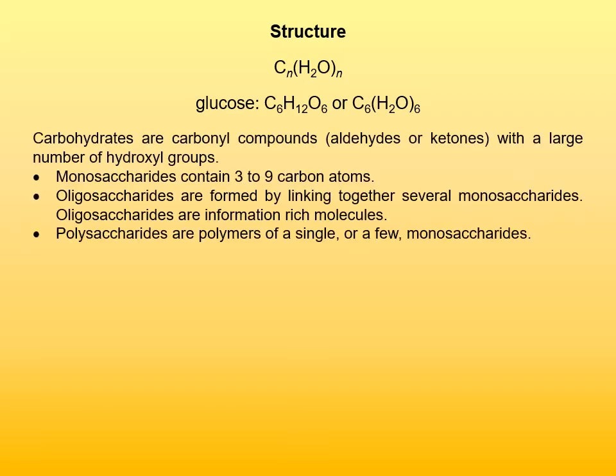When we consider the structure of carbohydrates, they are carbonyl compounds, which means they are aldehydes or ketones with a large number of hydroxyl groups. Monosaccharides contain three to nine carbon atoms, with three to six being the most common. Seven, eight, and nine carbon monosaccharides are relatively rare.